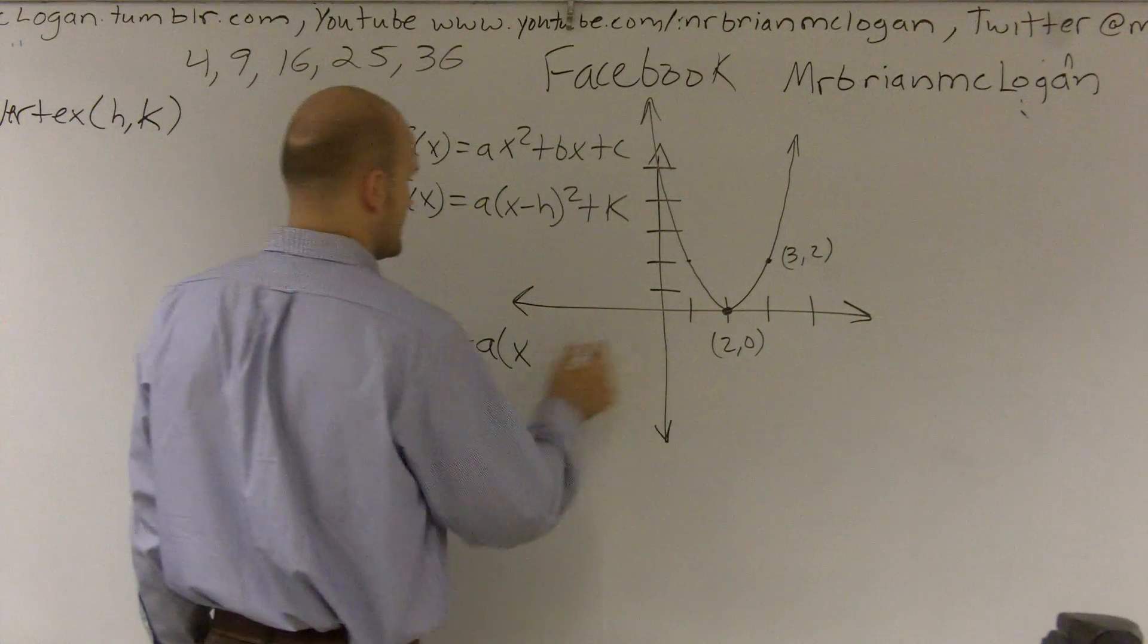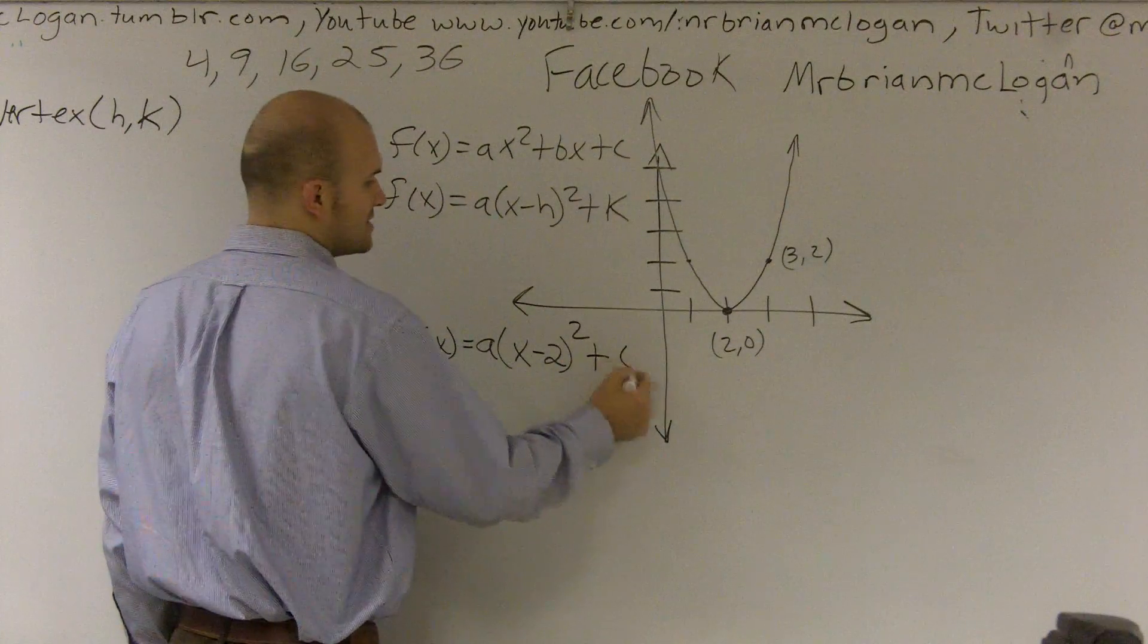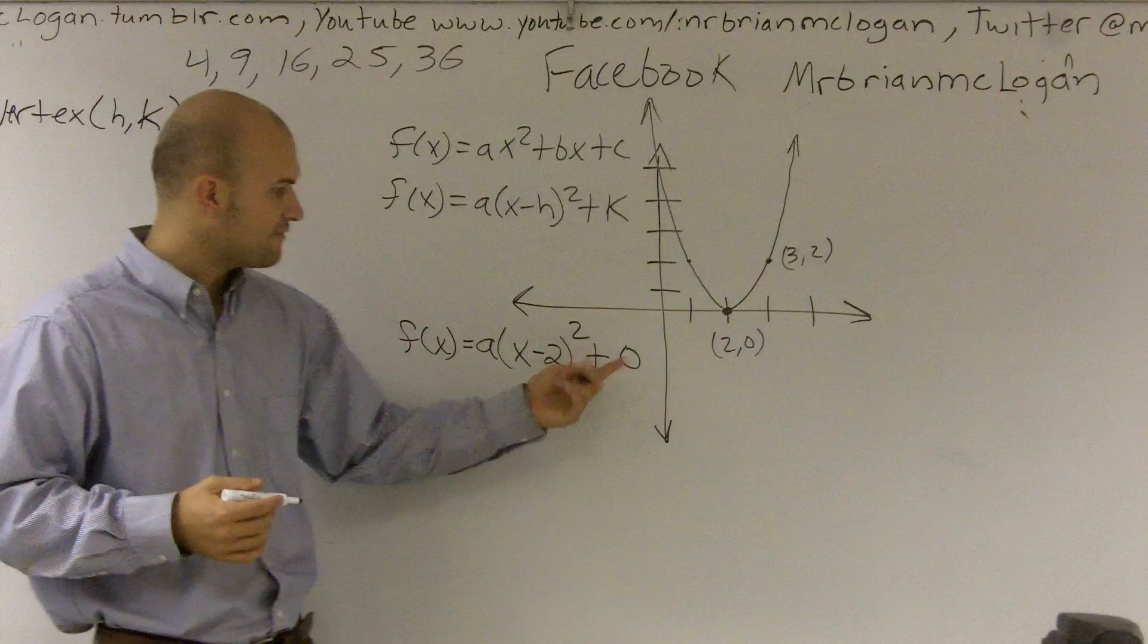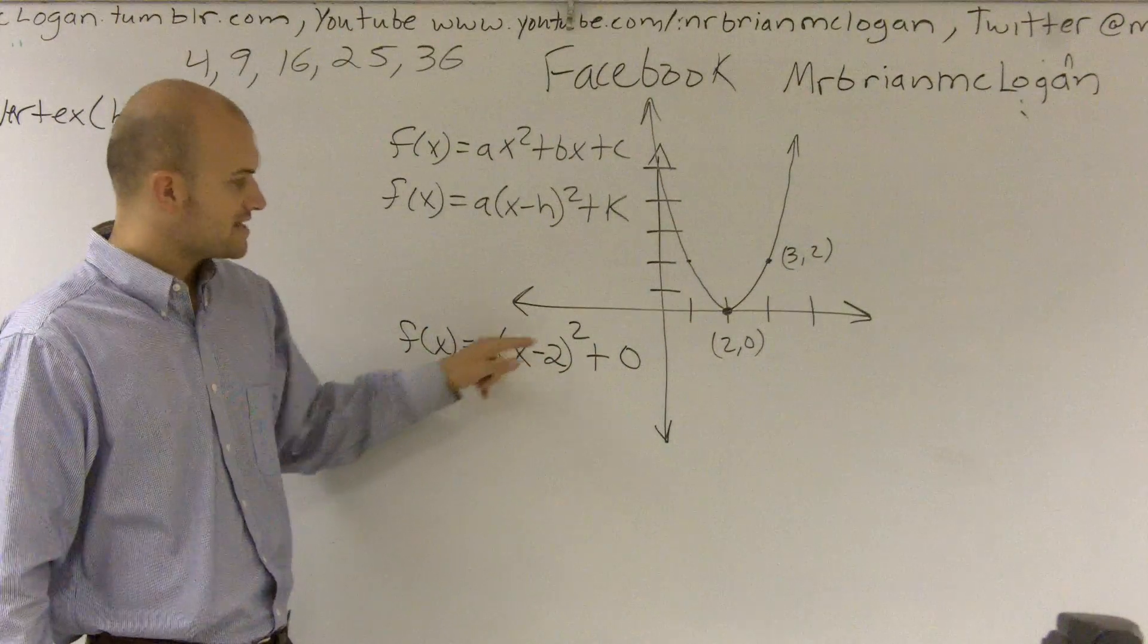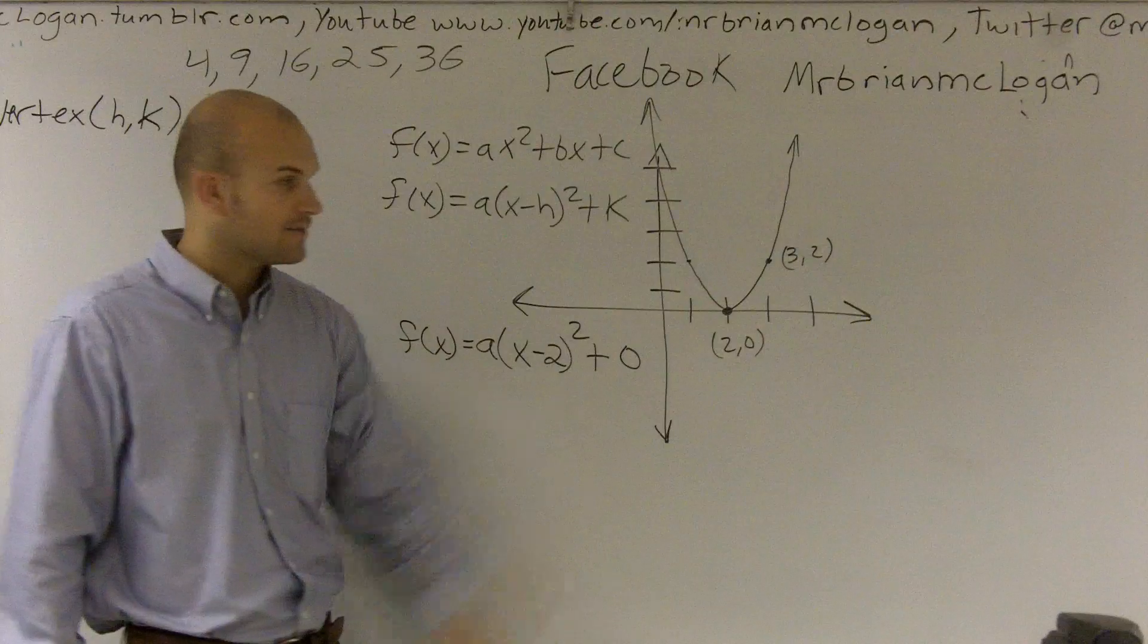Let's see, that's going to be x minus 2 squared, and then plus 0. Right? Because it's not moving up or down at all, and there's my vertex. And I can double check x minus 2, that means I shift it 2 to the right. So, perfect. Right there.